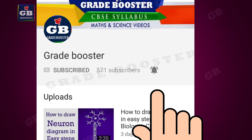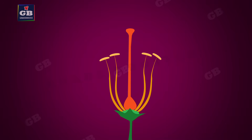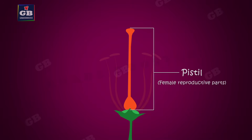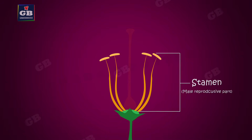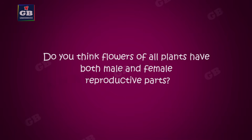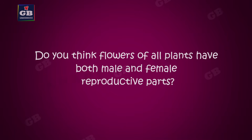Let us look at the reproductive parts inside the flower. This is the female reproductive part of the plant — it is called the pistil. It has three parts: stigma, style, and ovary. These are the male reproductive parts — it is called the stamen. It has two parts: anther and filament.